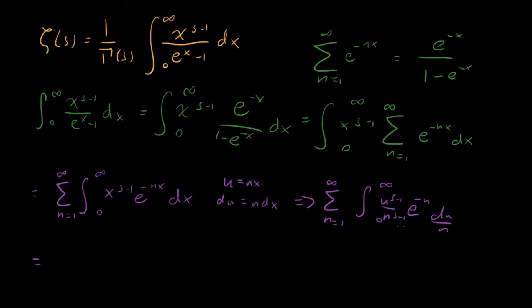So what can we do now? We can combine these n's right here, and we can pull them outside of the integral because they're not being integrated with respect to them. What do we have? We have sum n equals 1 to infinity, we have 1 over n to the s, right? Because we have n to the s minus 1 and n. Then we have integral 0 to infinity, u to the s minus 1, e to the minus u, du.